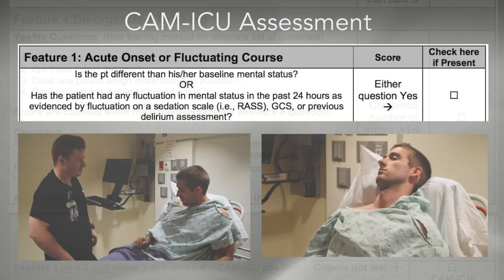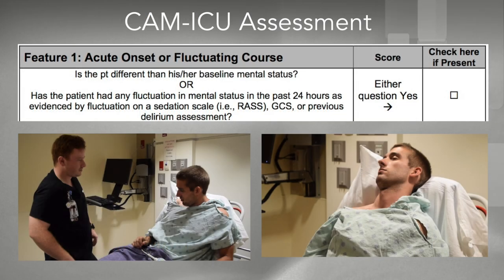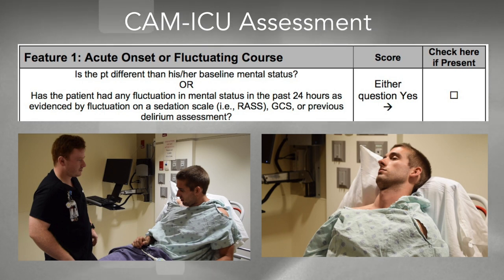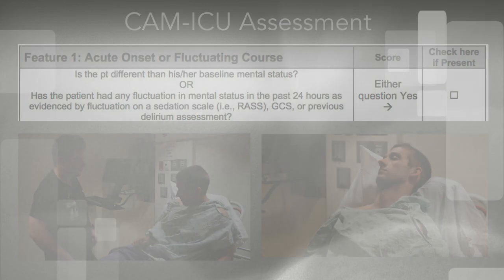For acute onset or fluctuating course, the RN will assess the patient for any acute mental status changes from the patient's baseline, or any mental status changes within the past 24 hours shown by changes according to the RAS scale.